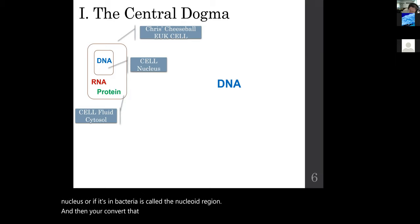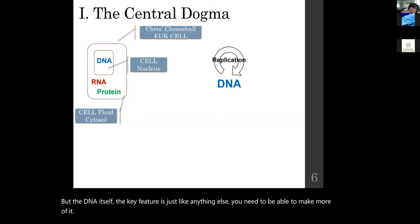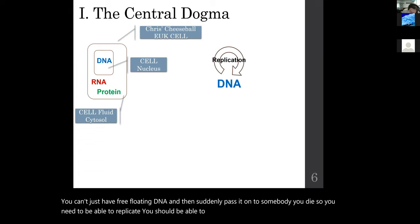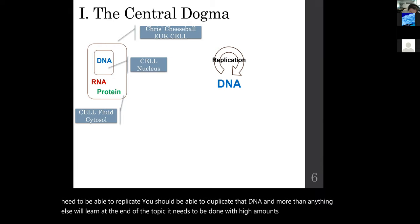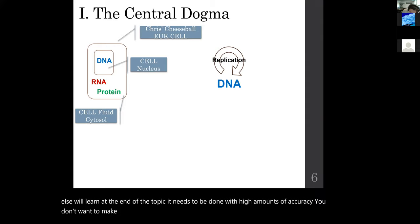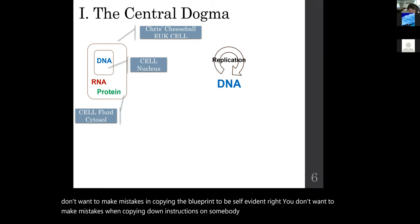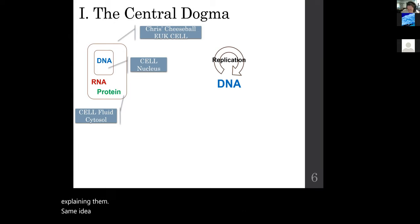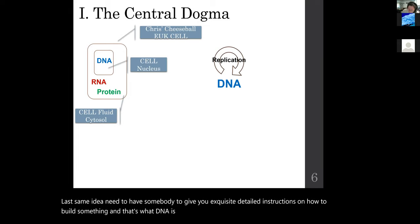The DNA converts into RNA and then into protein. The key feature of DNA is that you need to be able to make more of it — you need to replicate it. That duplication needs to be done with high accuracy. You don't want to make mistakes copying the blueprint. Think about asking someone for directions who explains them differently and you get lost — same idea. DNA is instructions, so you need to replicate them accurately, with high fidelity.